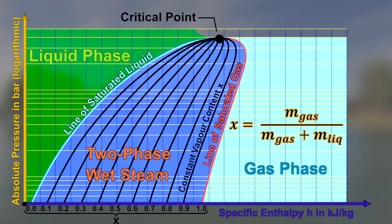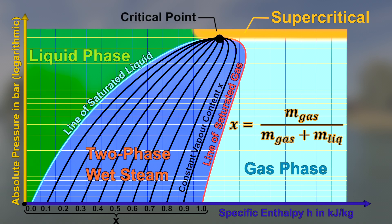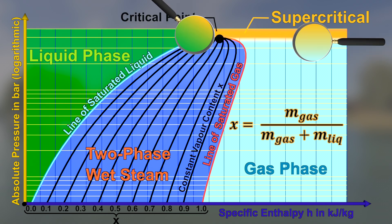If a state of a fluid is above the critical point, it is called a supercritical fluid or a supercritical gas. The transition from the liquid phase or the gaseous phase into the supercritical domain is not sudden but smooth and continuous.